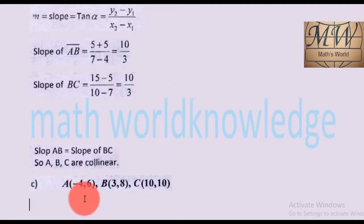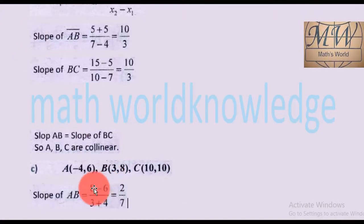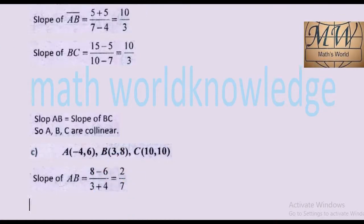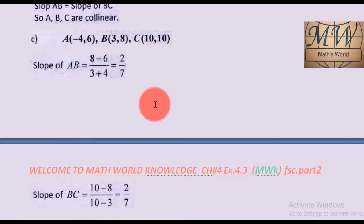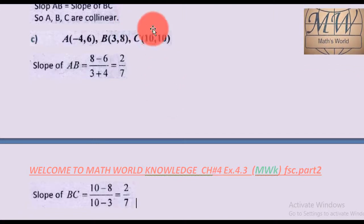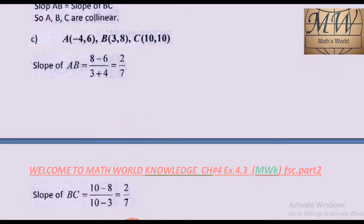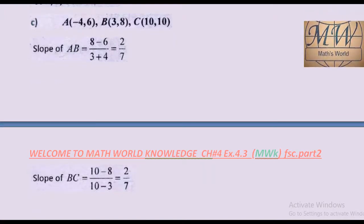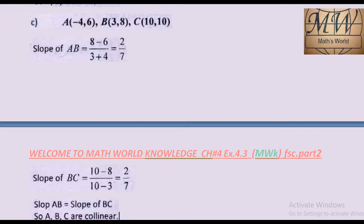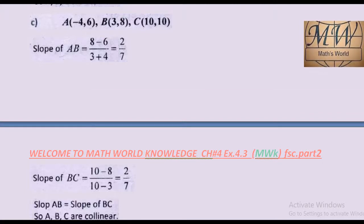Part (c): A, B and C are given. To find slope of AB = (8 - 6) / (3 + 4) = 2/7. Next, slope of BC: B is (3, 8) which is (x1, y1) and C is (10, 10) which is (x2, y2). Slope of BC = (10 - 8) / (10 - 3) = 2/7. Slope of AB and slope of BC are equal, so A, B, C lie on the same line - they are collinear.